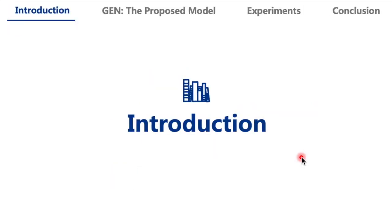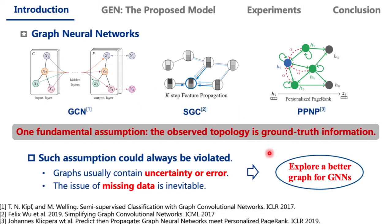Let's start with the introduction. Recently, there has been a surge of interest in graph neural networks, representing models such as GCN, SGC, and PPNP. They have achieved strong performance in many tasks, but they rely on one fundamental assumption that the topology is ground-truth information and consistent with the properties of GNNs.